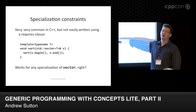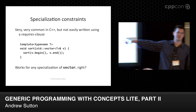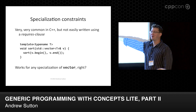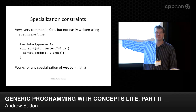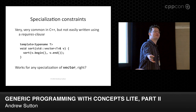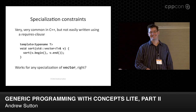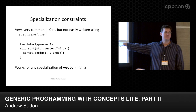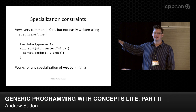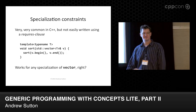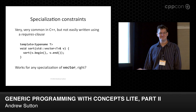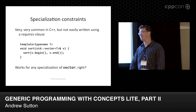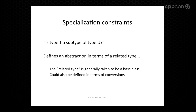Of course we all know that every specialization of vector works the same, so this algorithm is going to be correct no matter what arguments we provide, right? Now is your opportunity — vector<bool> does not work with sort. Actually, is that true anymore? It's required to work now. It used to be that it did not work, so I'm behind the times.